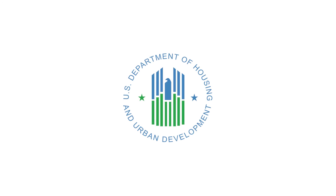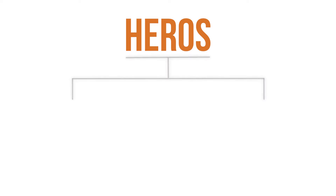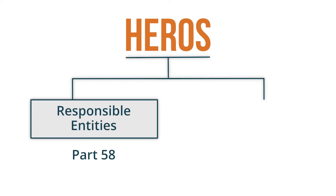This video will guide you through the steps necessary to obtain access to HEROES. The form provides HEROES access to two primary groups. Responsible entities, or REs, are responsible for creating Part 58 environmental reviews for their jurisdiction.